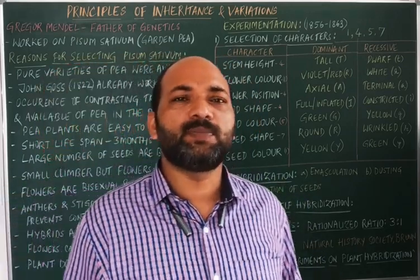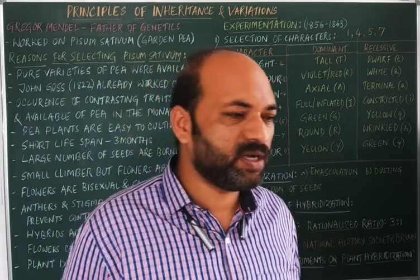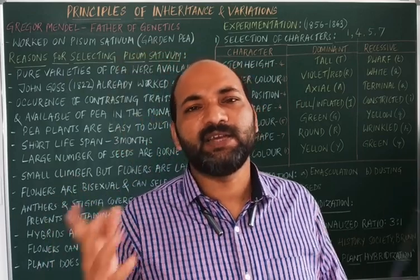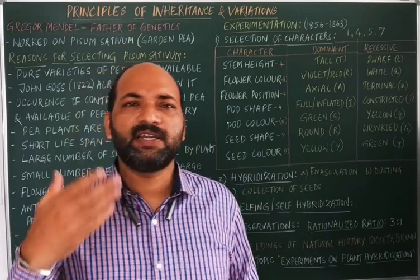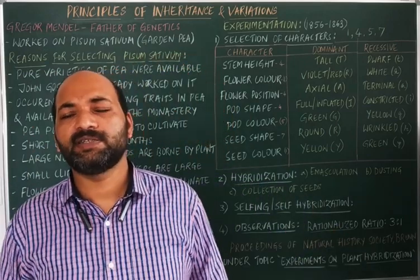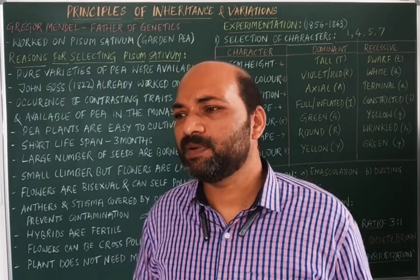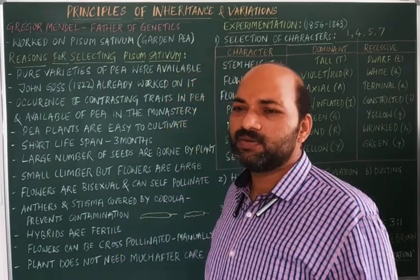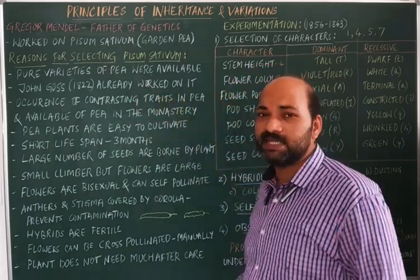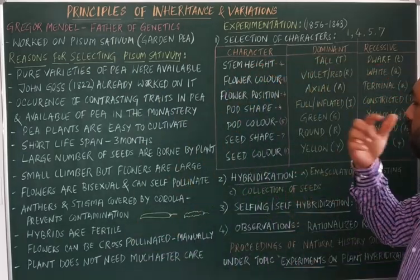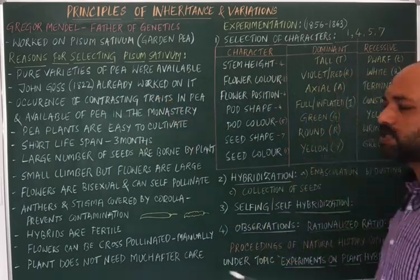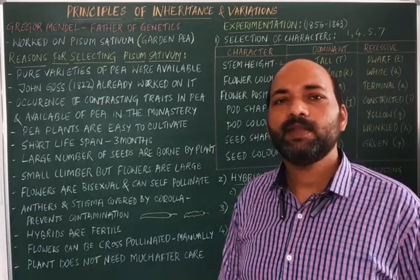The results were published in the Proceedings of the Natural History Society of Brunn under the title 'Experiments on Plant Hybridization' in the year 1866. Although Mendel conducted various experiments, name and fame was not given to him while he was alive. Later, around 1884, when Mendel died, various scientists started working on Mendelian experiments and rediscovered the Mendelian principles. Those geneticists who rediscovered his principles gave him the name 'father of genetics.' This concludes the video about Mendel — why he selected Pisum sativum and how the experiments were conducted.